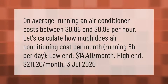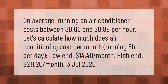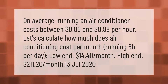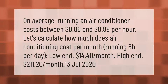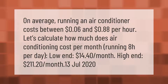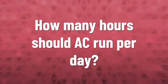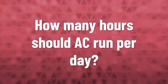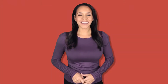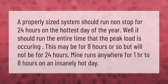On average, running an air conditioner costs between six cents and 88 cents per hour. Running 8 hours per day, air conditioning costs between $14.40 per month on the low end and $211.20 per month on the high end.